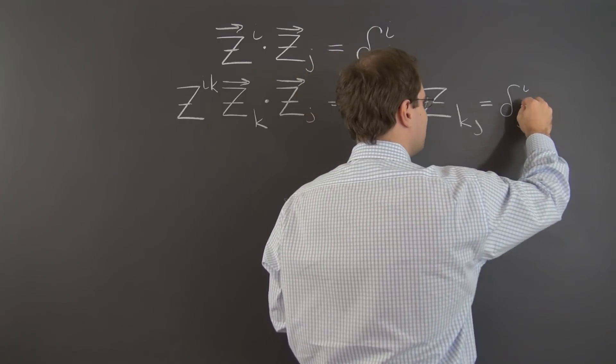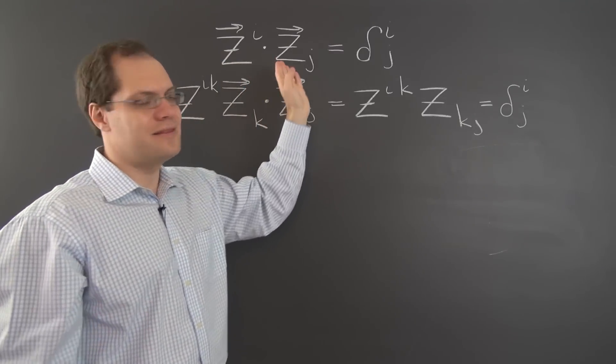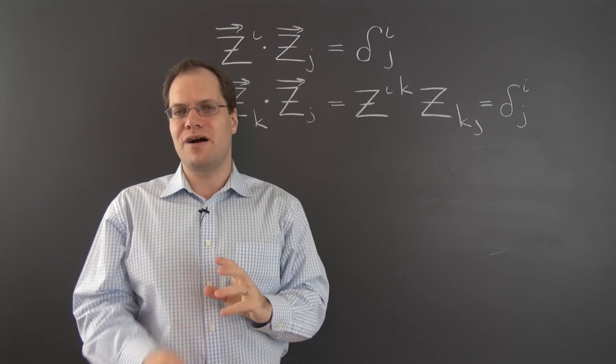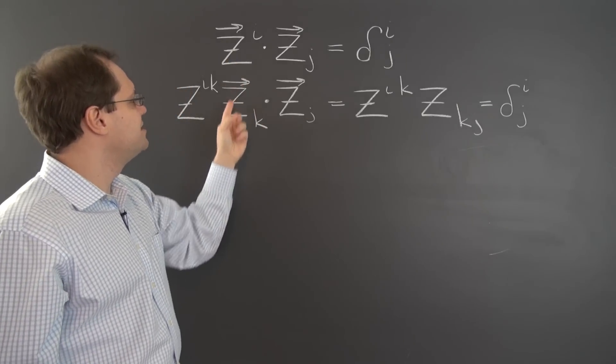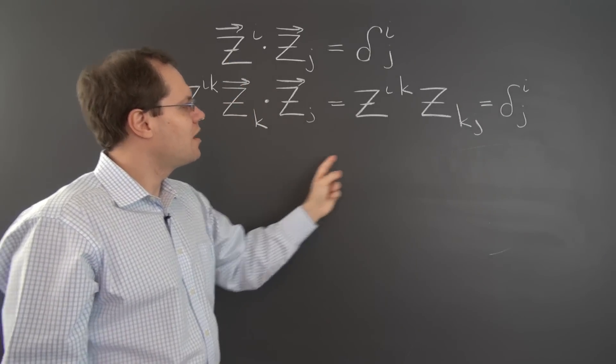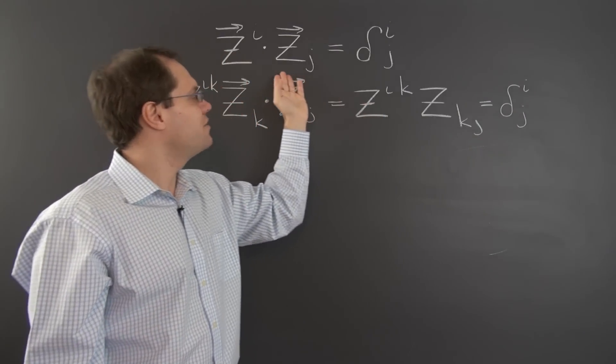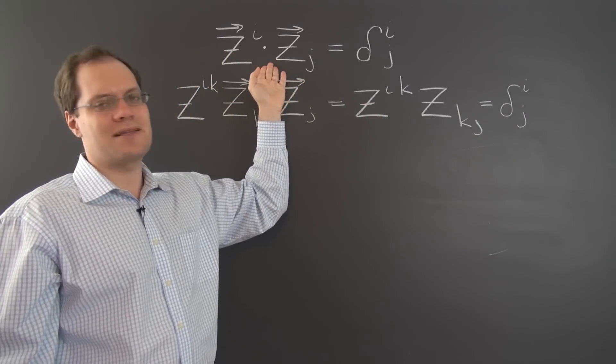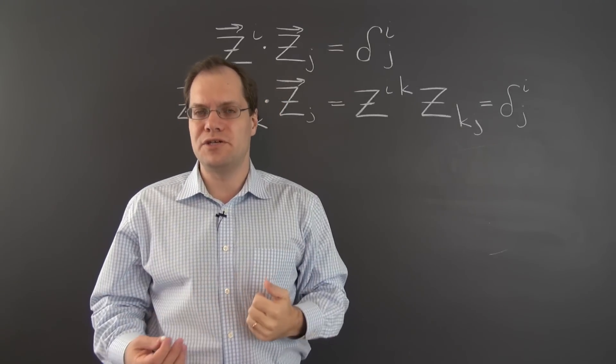So you see, there is nothing mysterious or affine or orthogonal about this relationship, even though it's orthogonal-looking. I'll talk about that in a second. All it is, is the definition of the contravariant basis element and the definition of the contravariant metric tensor. So all this really is, is something that's equivalent to these two definitions. So not mysterious at all.